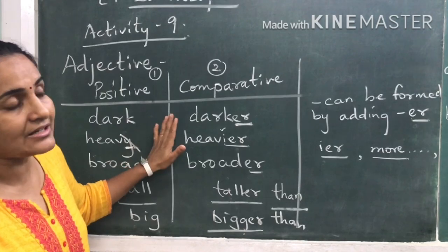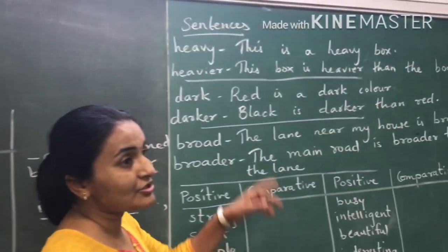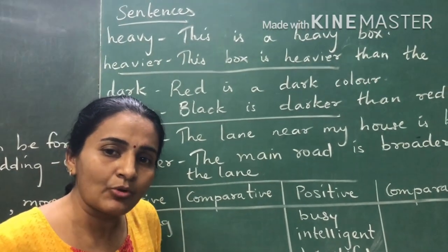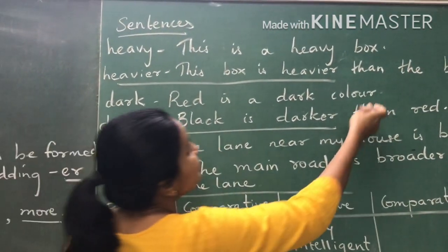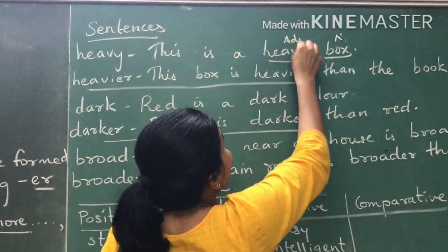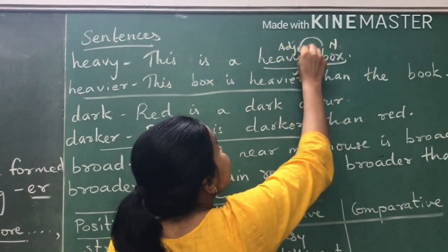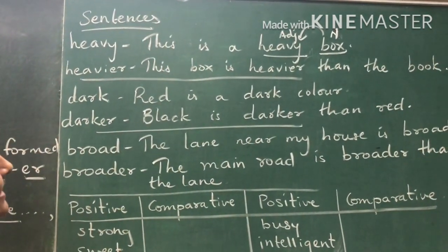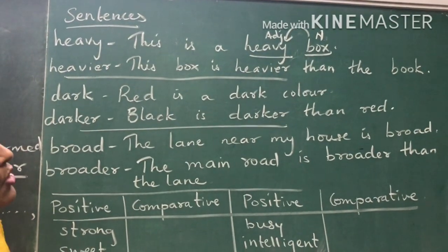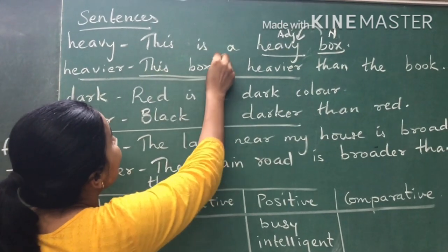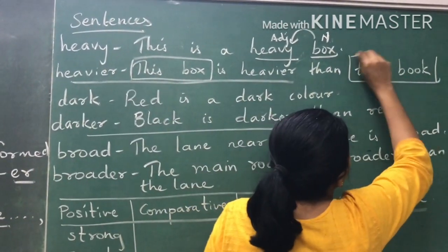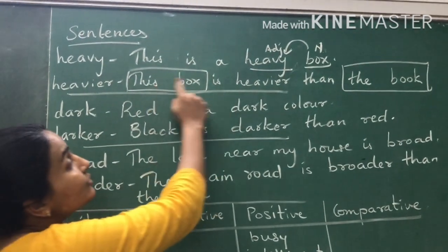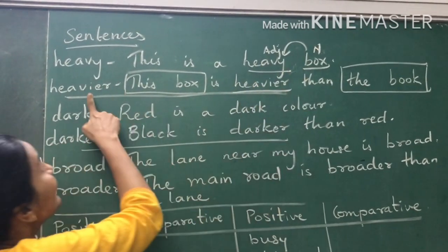Using words from Activity 9 to frame sentences: 'This is a heavy box' — talking about one box, so 'heavy' is positive degree. 'This box is heavier than the book' — here we compare the box and the book, so we use 'heavier' (comparative degree) followed by 'than.'